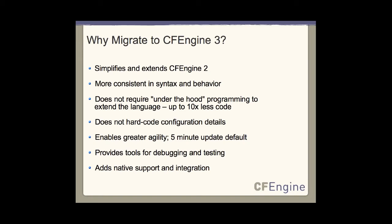CFEngine 3 is going to provide dry runs and tools for debugging and testing. The new CF Promises utility is called on every run. You can also invoke it manually when testing the integrity of a newly written promise. CFEngine 3 now natively supports a number of architectures. In the enterprise version, we support Windows, OS X, and can run on mobile devices as well.